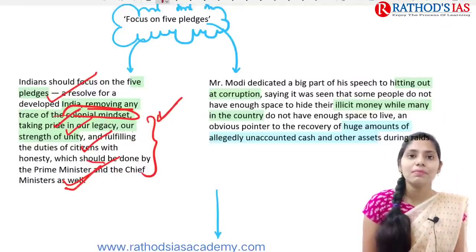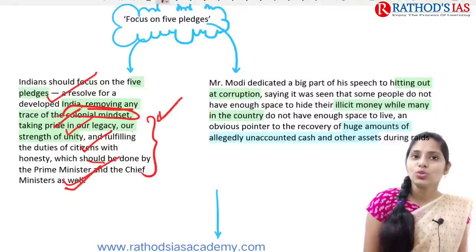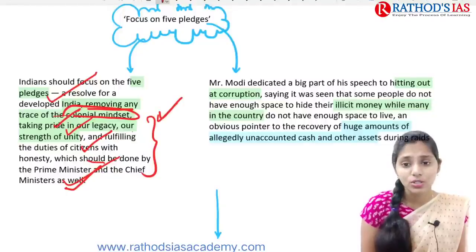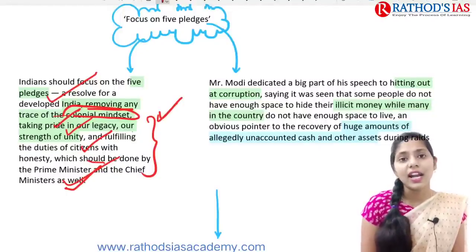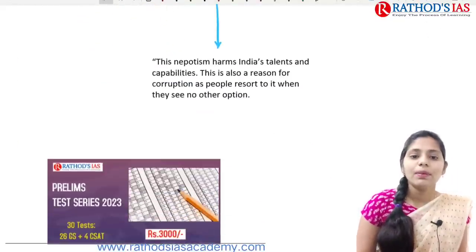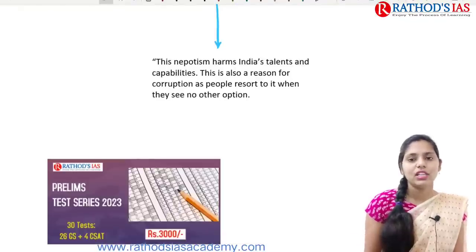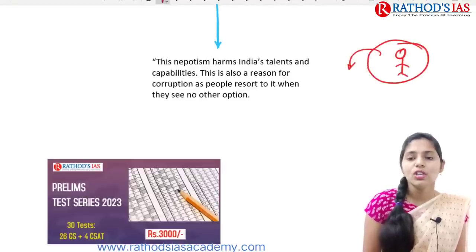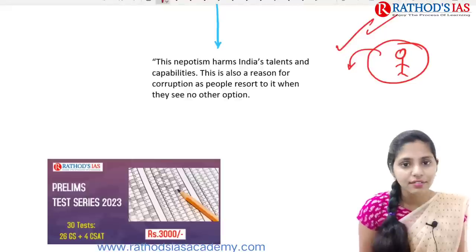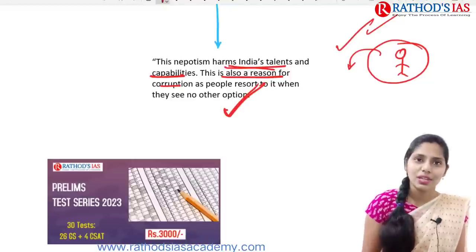The prime minister dedicated a big part of his speech to hitting out about corruption. He said some people are having a good amount of illicit money earned through illicit activities, while some people in the country do not have enough space to live. He said there are huge levels of corruption and unaccounted cash and other assets. On nepotism, he said it harms India's talents and capabilities — whenever there is favoritism, you have to compromise on merit, which impacts institutional organizations. Nepotism is also a reason for corruption in the country.